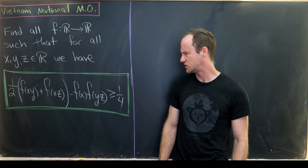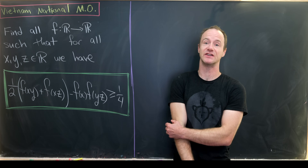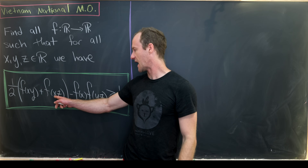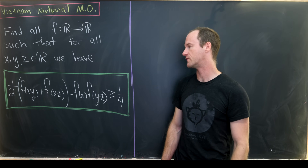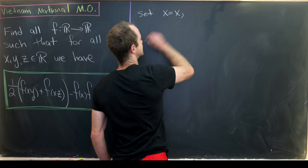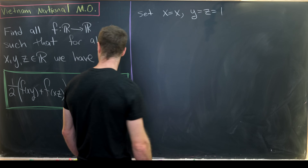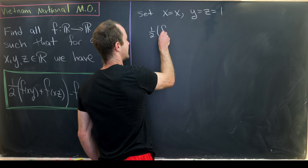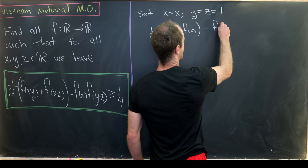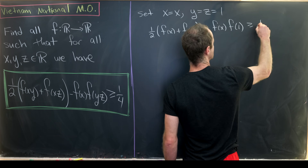That motivates us to set y and z equal to 1, which collapses this to an inequality that just involves x. We want x·z to just be x, and we need 1 for that. So setting y = z = 1, our functional inequality becomes one-half times f(x) plus f(x), minus f(x)·f(1), greater than or equal to one-quarter.